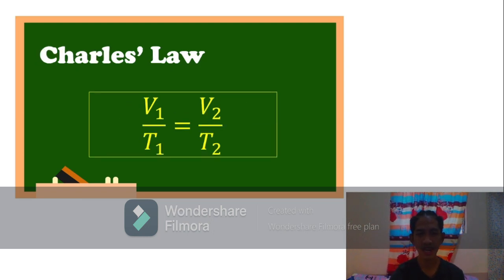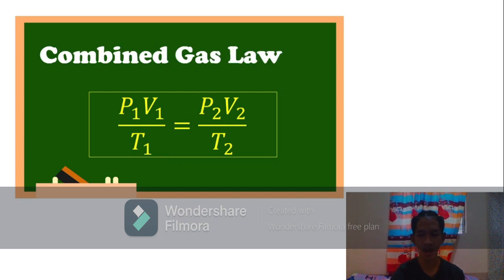On the other side, Charles' law tells us that volume and temperature are directly proportional. The third law is like a combination of Boyle's and Charles' law. It is called combined gas law.